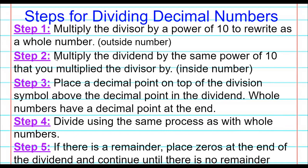Whatever I do to the outside I have to do to the inside — you've got to be fair to your numbers. So step two is to multiply the dividend by that same power of 10. Step three: place the decimal point on top of the division symbol, above the decimal point in the dividend, keeping it lined up. Step four: divide using the same process as with whole numbers. Step five: if there's a remainder, add zeros and continue dividing until there's no remainder.